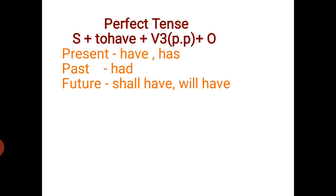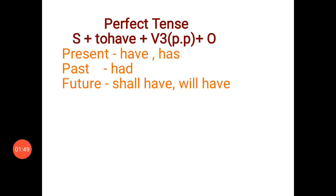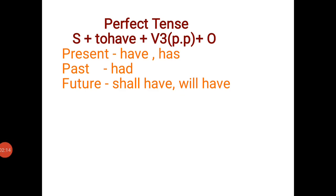For example, if we have to make a present perfect tense, we have to use 'have' or 'has'. If we have to make a past perfect tense, we use 'had'. And when we have to make a future perfect tense, we have to use 'shall have' or 'will have'.